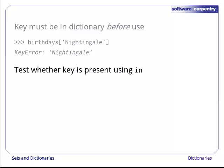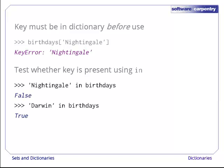If we're not sure whether a key is in a dictionary or not, we can test for it using the in operator. Given the current state of our birthdays dictionary, Nightingale in birthdays is false, but Darwin in birthdays is true.